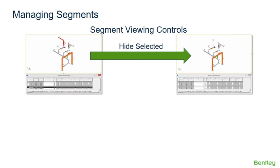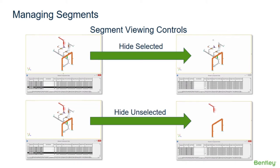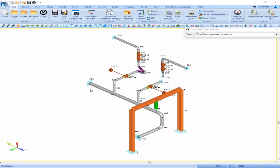We also have some segment viewing controls available. The hide selected segments command will hide all selected segments in the model, which is useful to remove segments that might be cluttering the model when investigating a critical area. The hide unselected segments command will hide all unselected segments, useful to isolate a few segments to only view and work with those specific segments. There's also a show all segments command which makes all segments visible — useful to quickly view the complete model.